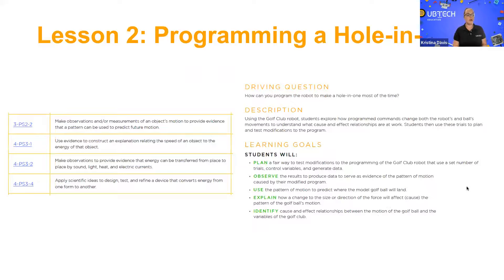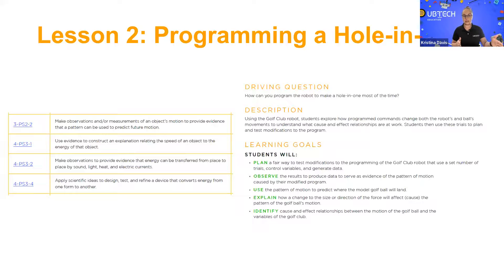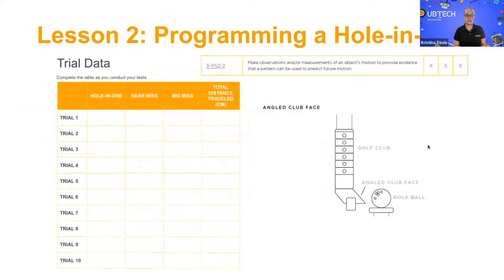From those standards, in lesson two, the students are working on programming a hole in one. The standards focused on in this lesson are to the left — we've got a third grade standard and three fourth grade standards all around physical science. The driving question is: how can you program the robot to make a hole in one most of the time? Students are really going to work on programming it with the understanding of the cause and effect relationship — I hit this ball, it goes here, now what happens? A lot of trial and error. Students actually focus on making observations and measurements of the motion of the object, collecting all their data — did it work, were we close, and they get to measure the distance.